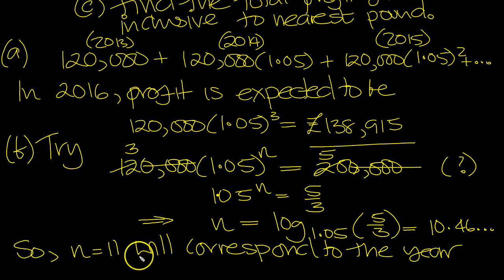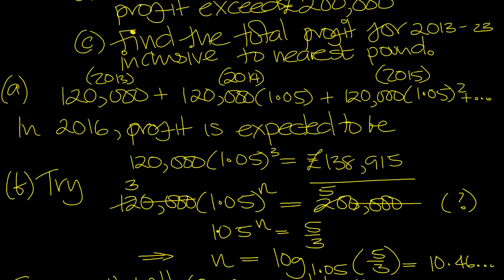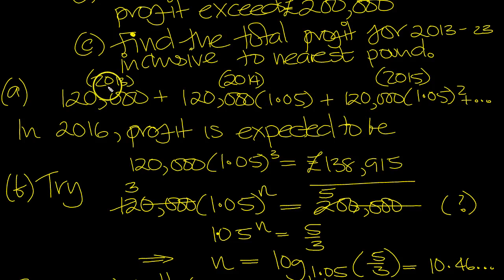And that would be... N is 11 would be the twelfth term. OK, N is 11. Then let's go back to our sequence. When N was 0, it was 2013. N was 1, it was 14. N is 2, it's 15.